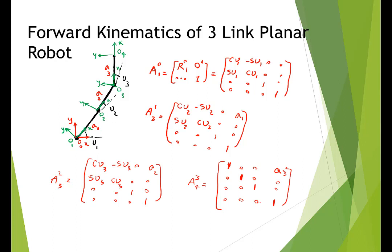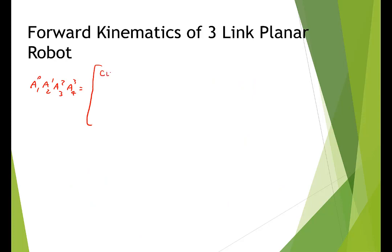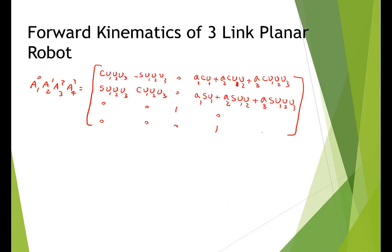We now have three homogeneous transformations. To express frame 4 with respect to frame 0, we multiply all the transformation matrices together. Doing so, the intermediate frames cancel out and we get the final transformation matrix that brings anything in the end effector frame (frame 4) to the fixed global stationary frame at the base of the robot. Multiplying all these matrices yields a single 4×4 result matrix.